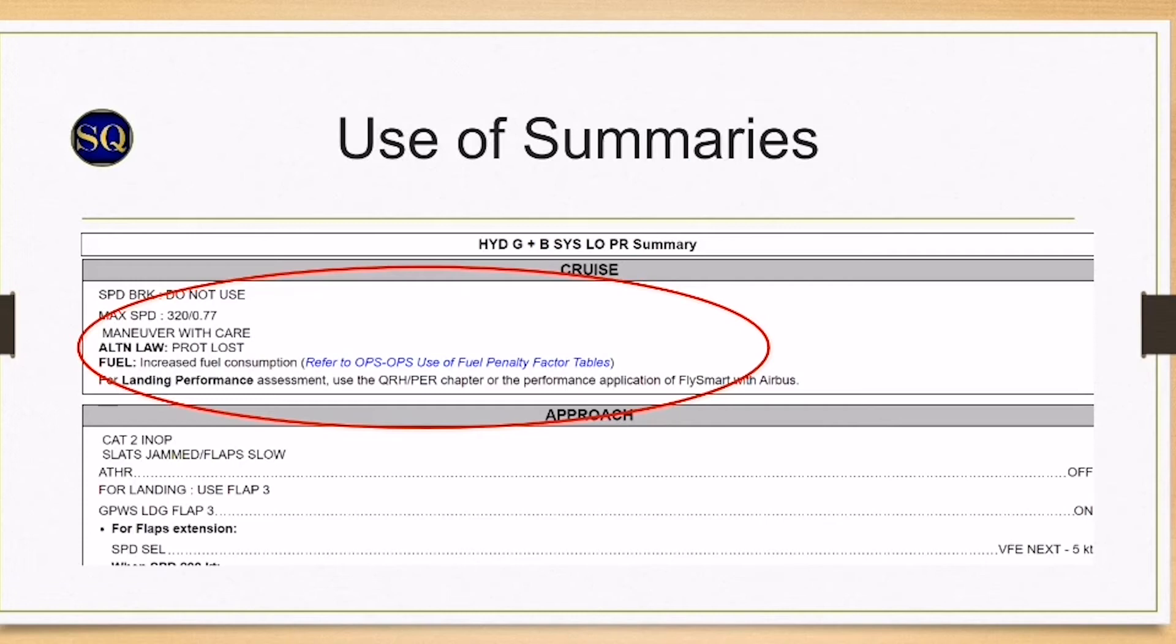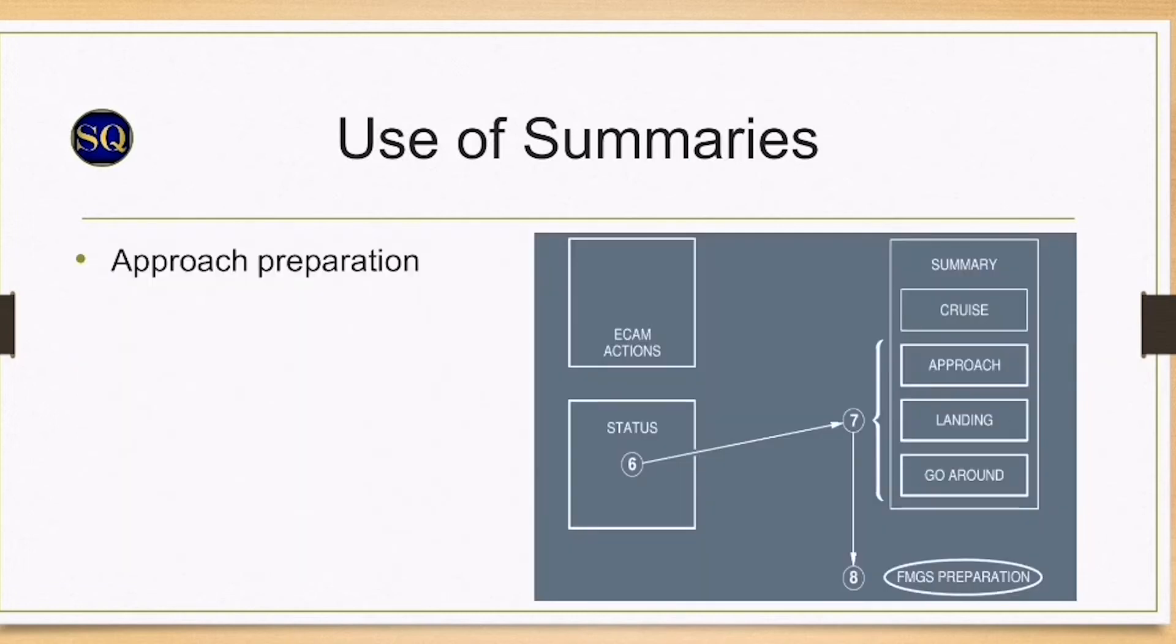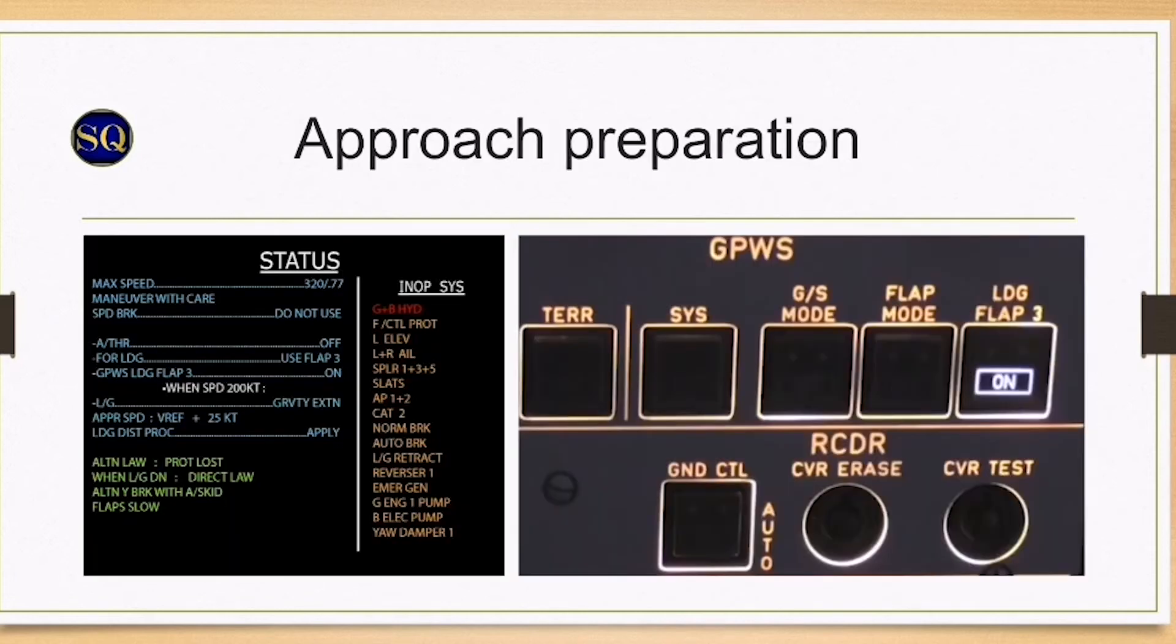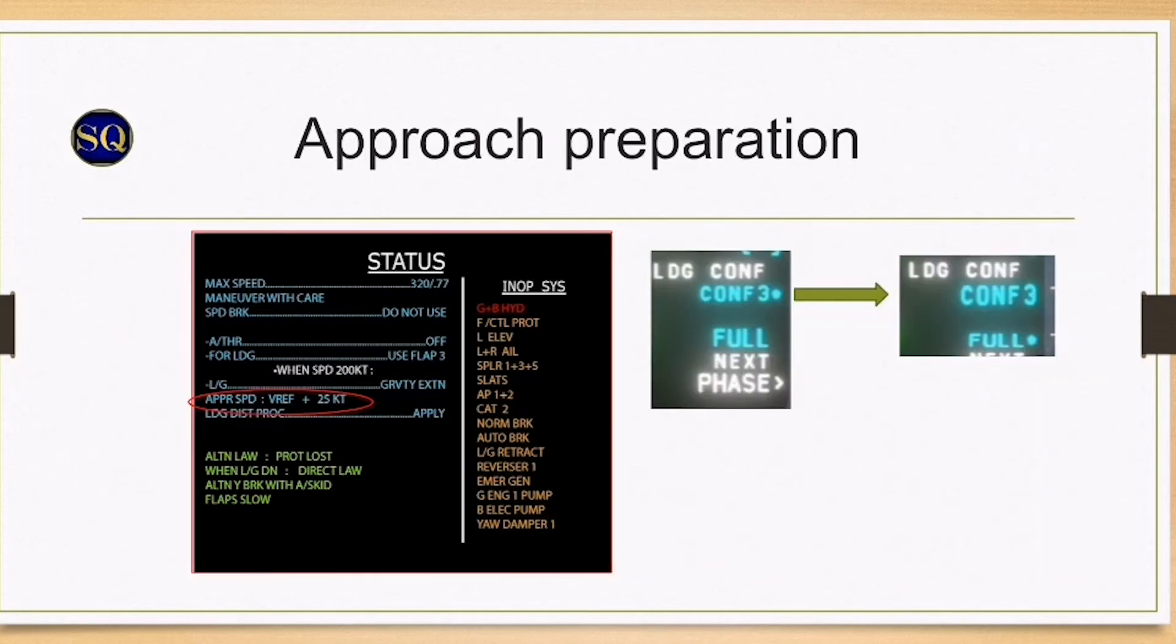The pilot flying hands control to pilot monitoring and uses green and blue hydraulic system low pressure summary status at FMGS to prepare the aircraft and brief for the approach, landing, and go around. GPWS flaps 3 on, add 25 knots to VLS, config 4, and select landing config 3 next in line in the approach briefing in which you talk about the approach considerations.